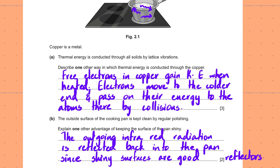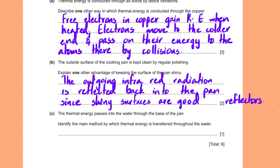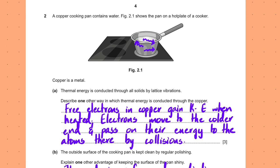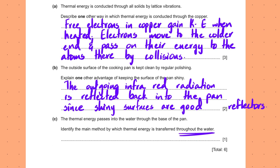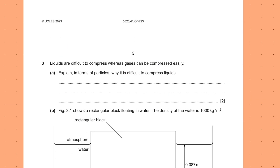Thermal energy passes into the water through the base of the pan. Identify the main method by which thermal energy is transferred throughout the water. This water only heats up near the base. The examiner asks 'how is it transferred to all of the water,' or 'how does all the water get heated up' — to get you thinking about convection.